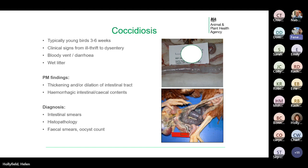Coccidiosis is something we see frequently. It typically affects younger birds at around three to six weeks of age, but you can see cases in older birds if immunity has waned or hasn't developed. There can be a range of clinical signs from ill thrift to dysentery, and you may notice affected birds have a bloody vent or diarrhoea, or you might see wet litter in the poultry house.